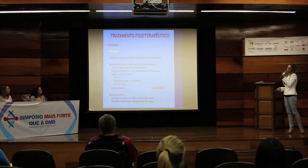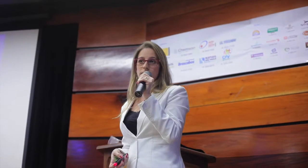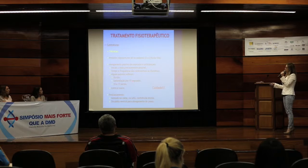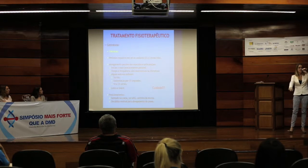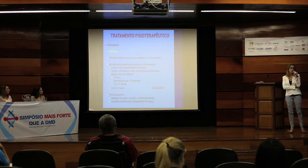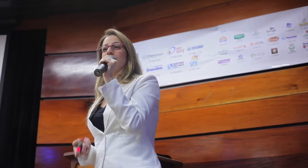A gente controla as contraturas com alongamento e uso de órteses. O alongamento ainda é um ponto de interrogação na literatura, com informações diversas. Algumas informações falam que a gente tem que fazer alongamento duas vezes por dia, sustentando 15 segundos e repetindo de 10 a 15 séries. Se a gente faz fisioterapia uma ou duas vezes na semana e conta até 10 só, o alongamento feito apenas na fisioterapia não é suficiente para manter a ADM e evitar a progressão das contraturas. Por isso se faz necessário o acompanhamento com alongamentos domiciliares diários.